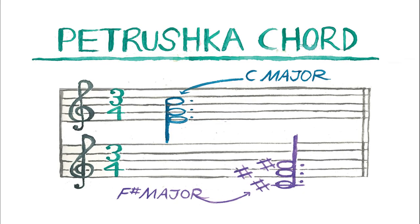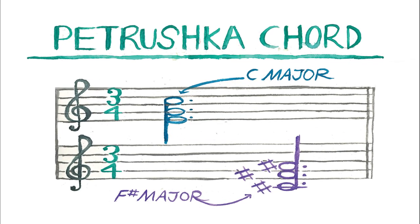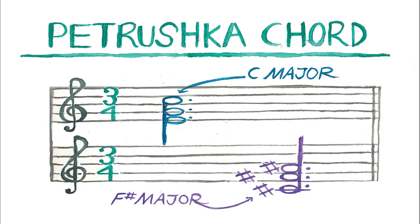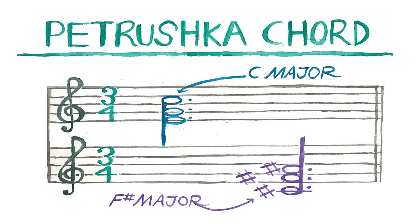So to begin, let's take a quick look at the famous Petrushka chord, used by Igor Stravinsky in his ballet Petrushka. This is a combination of C major and F sharp major, two chords that sound extremely dissonant against each other.